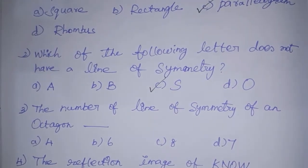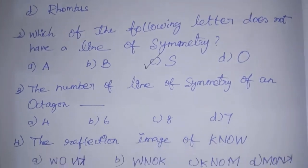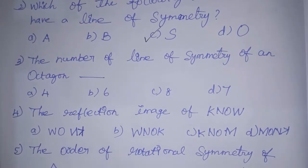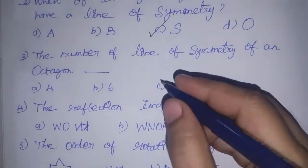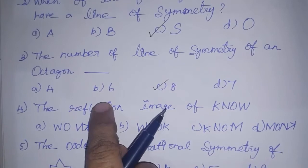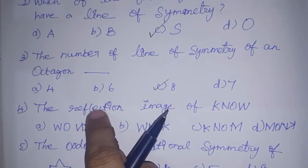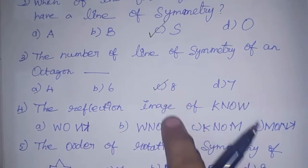In symmetry, there are two equal halves. Next, the third sum: the number of lines of symmetry of an octagon. An octagon has 8 sides, 8 equal sides, 8 equal angles. So on any equal side, we can see the same line of symmetry. Therefore it has 8 lines of symmetry.